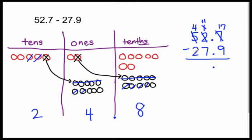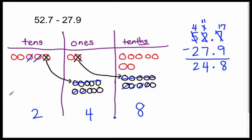And now I can subtract seven ones from eleven ones. I'm trying to subtract two tens. Do I have two or more tens? Yes, I do. The subtraction begins. Seventeen tenths minus nine tenths is eight tenths, and that's what we see right there. Eleven ones minus seven ones is four ones, and that's what we see right here. And the last one: four tens minus two tens is two tens, and that's what we see right there. So you see where the algorithm comes from? It comes from a very deep understanding of place value, and the idea that you can only add or subtract when you have the same units.